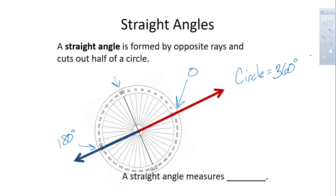So if a straight angle cuts out half a circle, how much is that? It's 180, right? So half the circle is 180 degrees, and a straight angle measures 180.